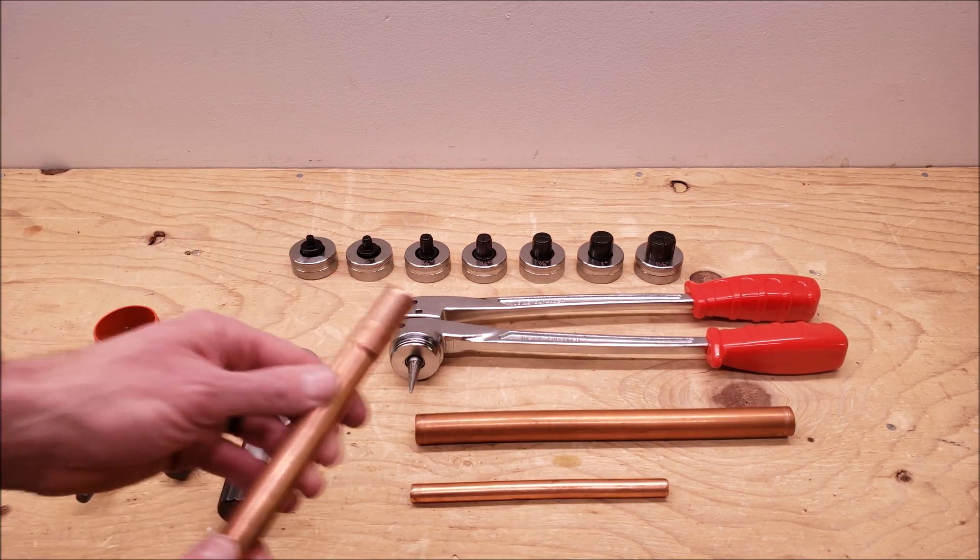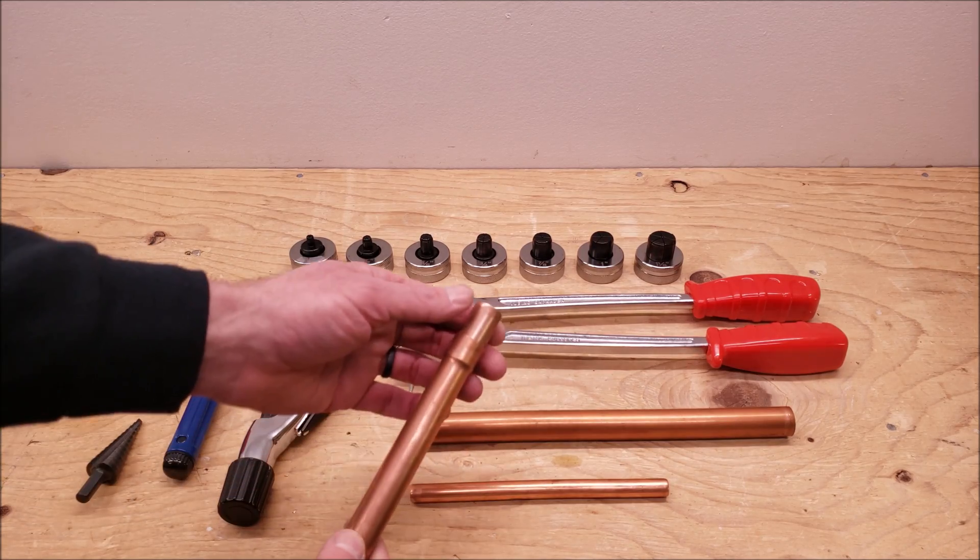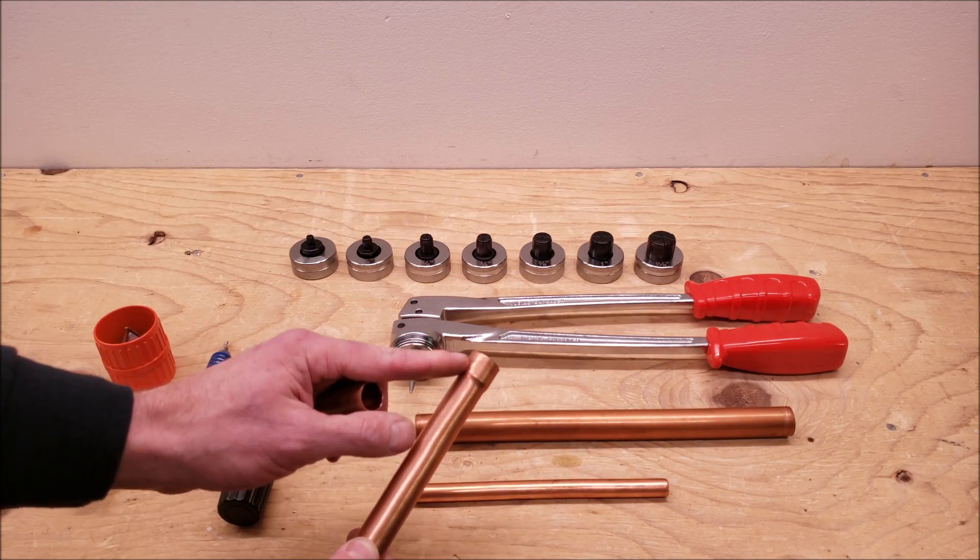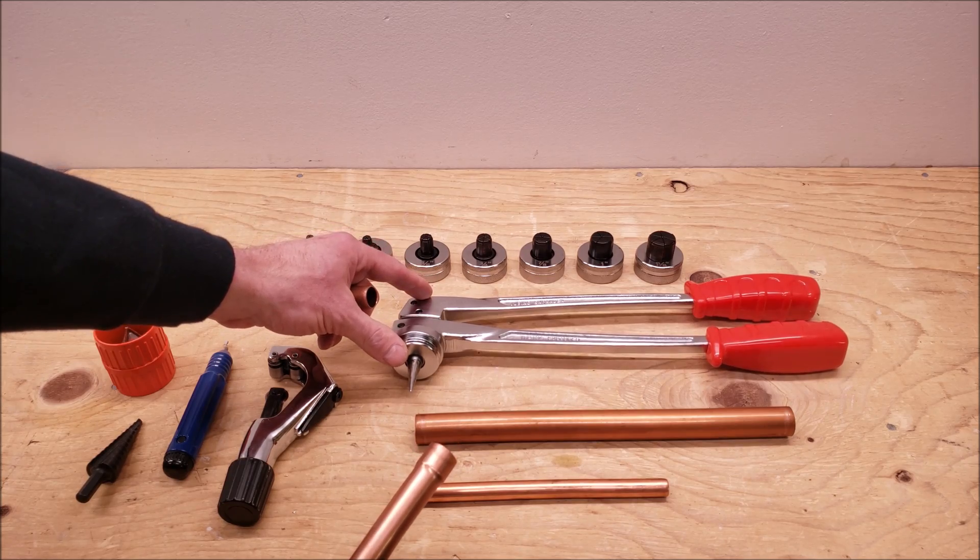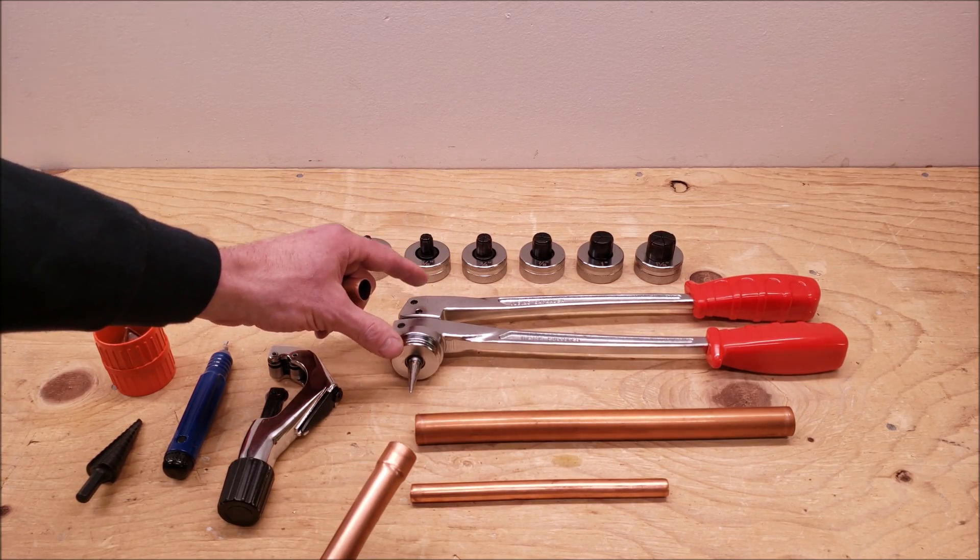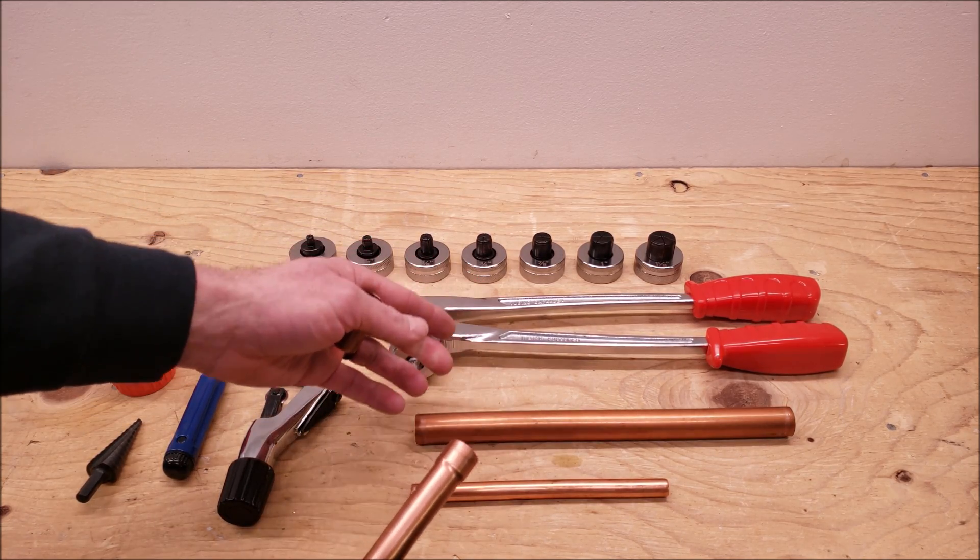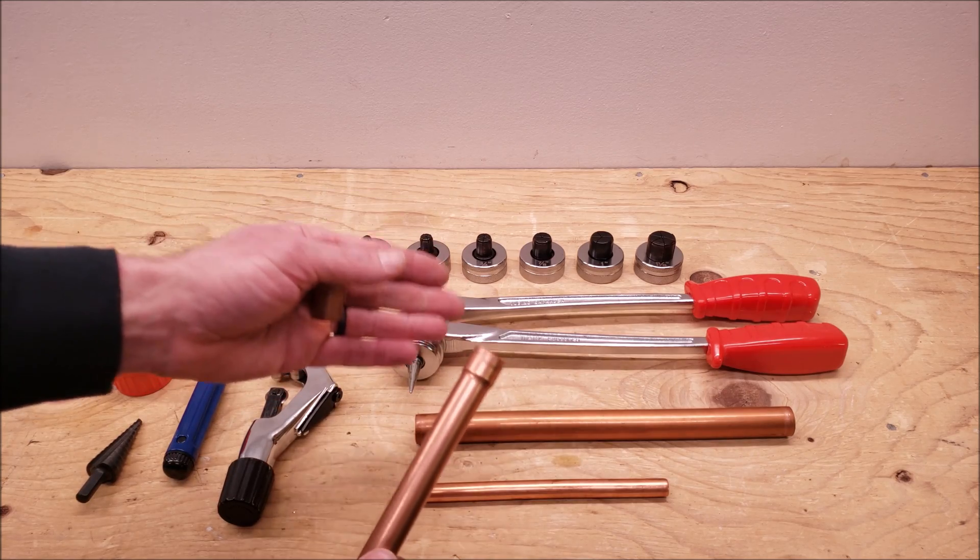So this is what a swage looks like on copper tubing. What you're doing is expanding the tube, and a tube expander like this or manual swager can work with either copper or aluminum, basically soft metals.